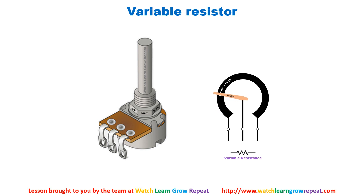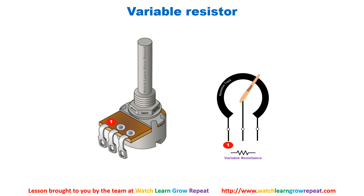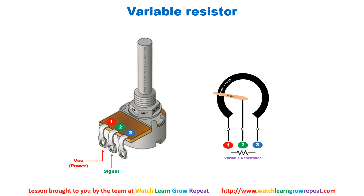There is a special type called a variable resistor. It has a circular resistive track with a wiper that moves across it — as the wiper moves further from one terminal, the resistance increases. With three terminals: terminal one (labeled red) connects to VCC, the center terminal (labeled green) is the output, and terminal three (labeled blue) is shorted to ground. When the knob is turned, the wiper rotates on the resistance track.